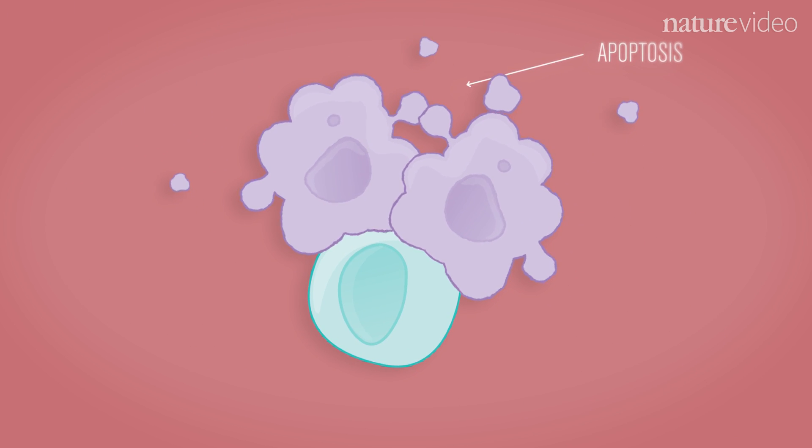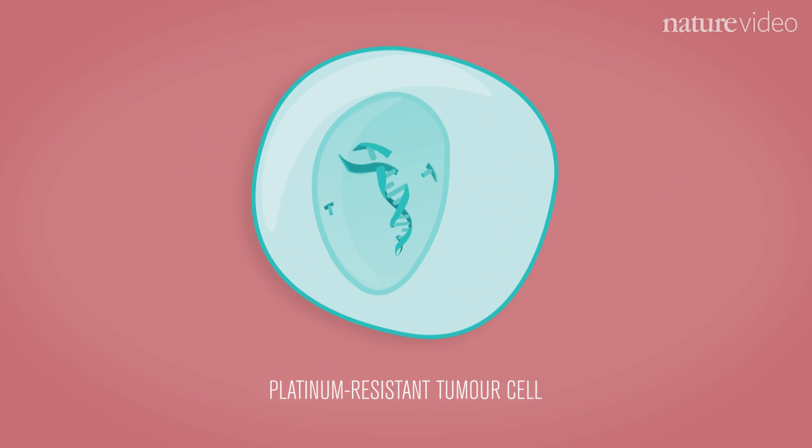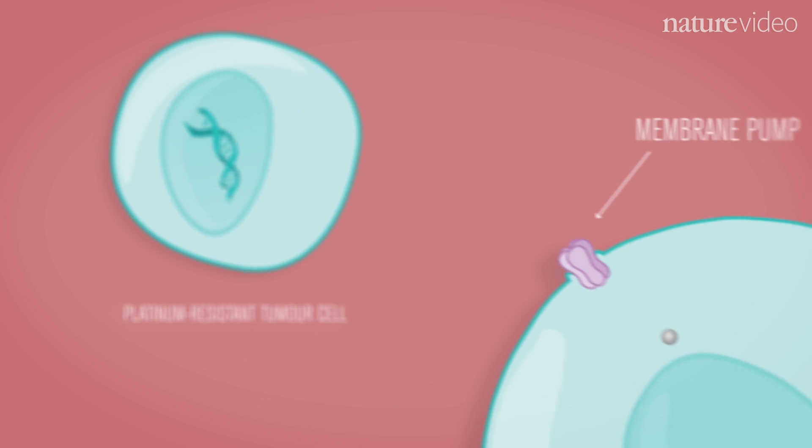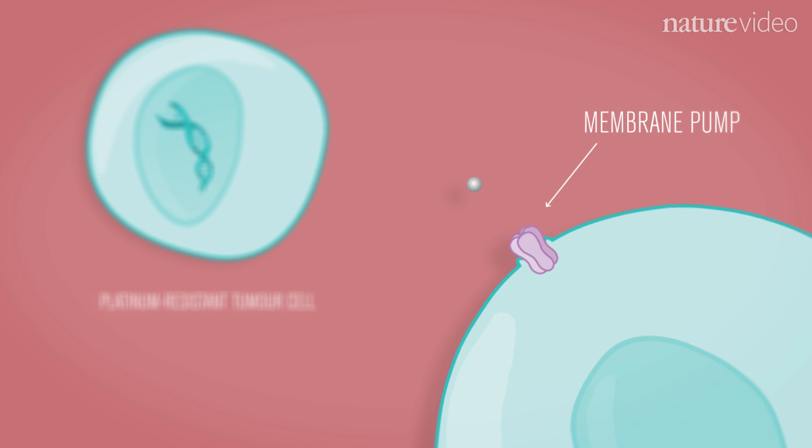But platinum-resistant tumor cells use a variety of tricks to fight back. Some cells learn to repair damaged DNA. Other cells pump the platinum out before it does any damage.